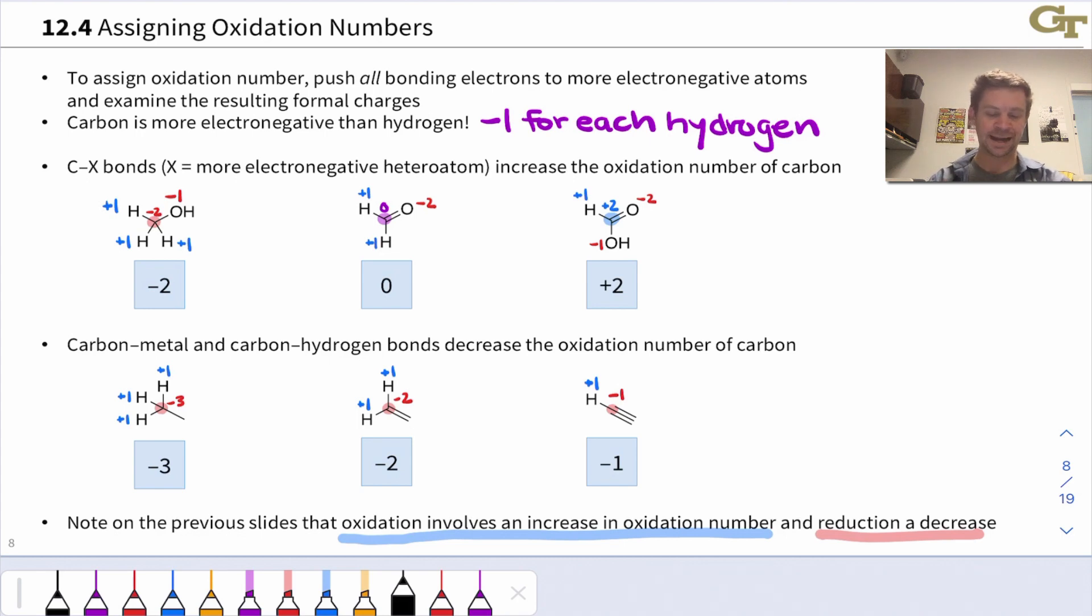For example, a reaction that involves the conversion of an alkyne into an alkane, a hydrogenation process, which you may have seen before in your Organic Chemistry I course, corresponds to reduction. Meanwhile, the conversion of an aldehyde into a carboxylic acid corresponds to an oxidation process, since the oxidation number of the carbonyl carbon is increasing, going from zero to plus two.